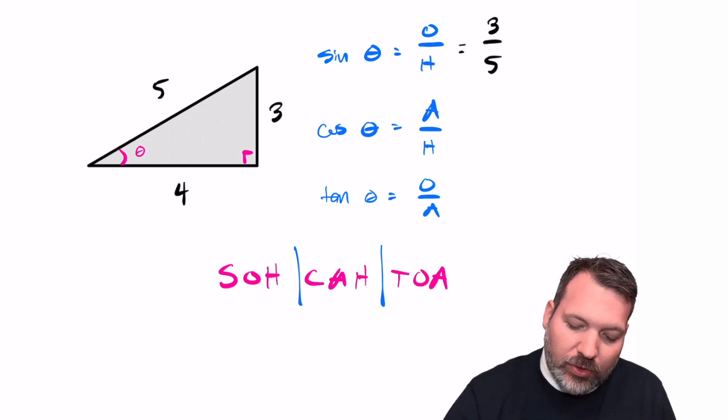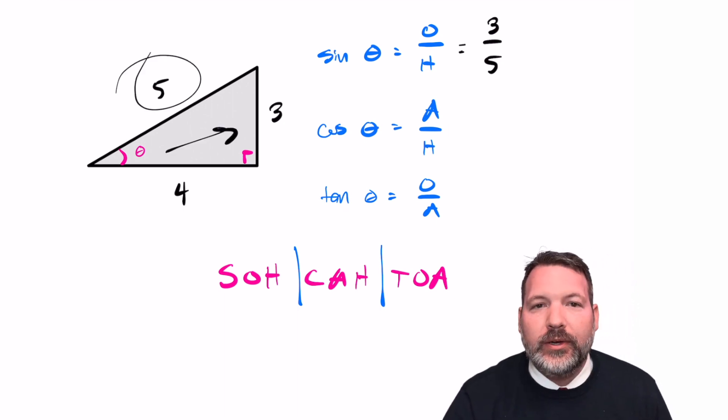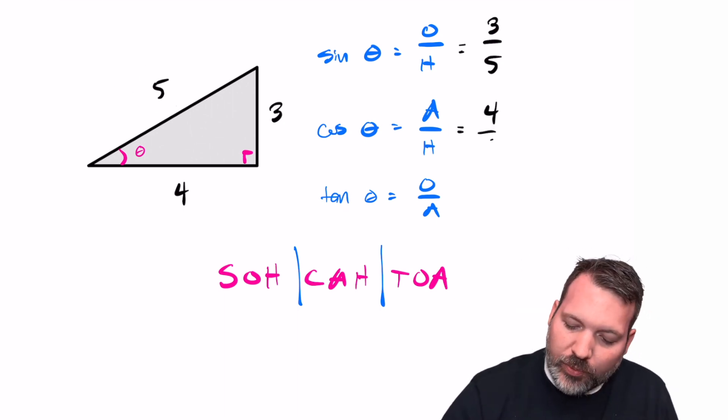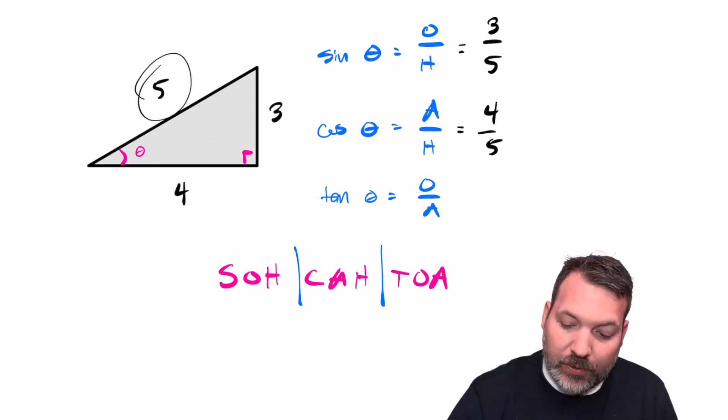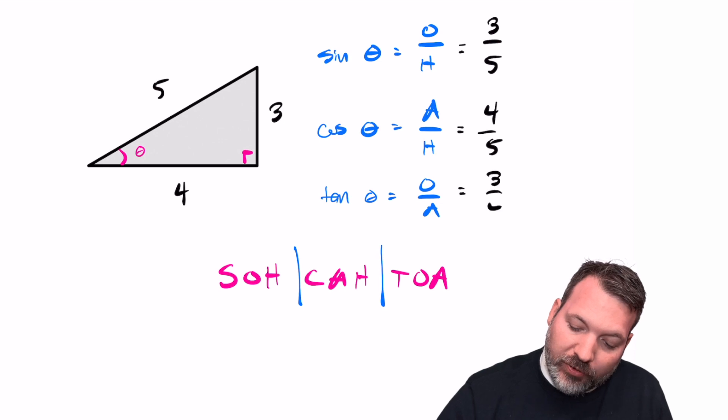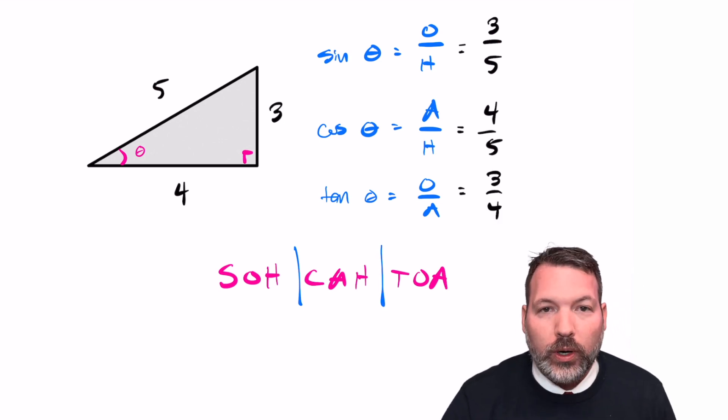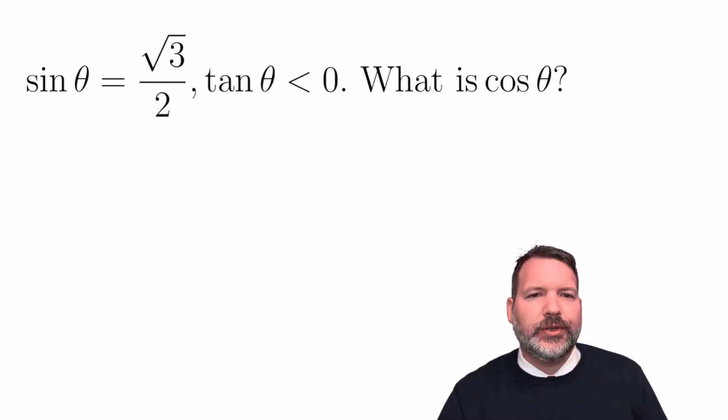Sine would be the opposite side 3 divided by the hypotenuse of 5. Cosine here would be 4 fifths, that is the adjacent side to that angle divided by the same hypotenuse of 5, and tangent would be opposite over adjacent, 3 over 4. So you start out feeling pretty good, that's not so bad, right?